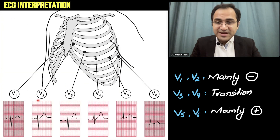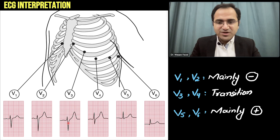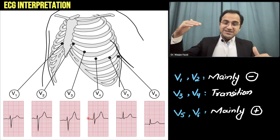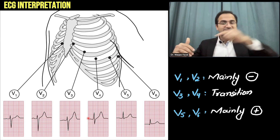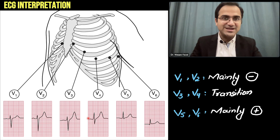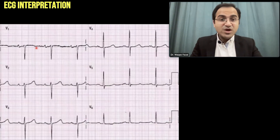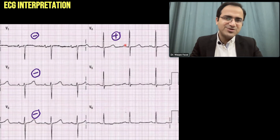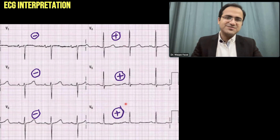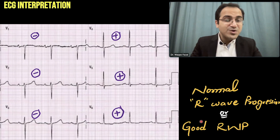This picture shows V1 and V2 which are negatively deflected, V5 and V6 which are positively deflected, and V3 negative with V4 positive — all of which is normal. Looking at this ECG, V1 and V2 are negative — normal. V5 and V6 are positive — also normal. V3 and V4 are in the transition phase with V3 negative and V4 positive — normal. So this is a normal, good R wave progression.